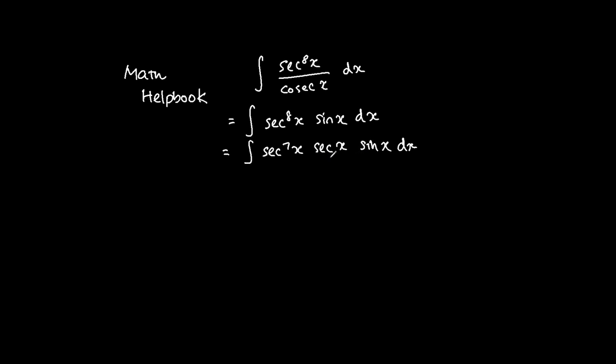So we know that sec x is equal to 1 over cosine x. And sine times 1 over cosine x is just basically equals to tangent x. So we have sec to the power of 7x tangent x.